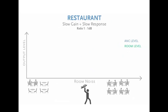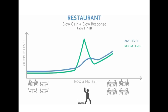The next example shows a restaurant. Again, when the restaurant is empty, announcements and background music are at a low output level. As the room increases with people, which in turn means an increase in ambient noise, the system automatically adjusts the output level. The ratio here is 1 decibel to 1 decibel. What's interesting in this example is the system has been configured with a slow gain and a slow response. The slow response means that if a waiter were to drop a plate or a coffee machine made a lot of noise for a short amount of time, the system would not suddenly increase the ANC level, shown by the blue line, in response to the quick sharp noises, shown by the green line.